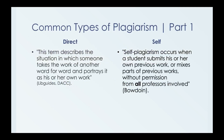There are mainly four common types of plagiarism. The first one is direct plagiarism. Direct plagiarism describes a situation in which someone takes the work of another word for word and portrays it as his or her own work. This happens a lot when people forget to cite and forget to put quotation marks.